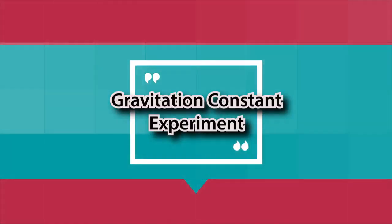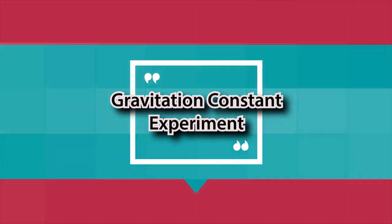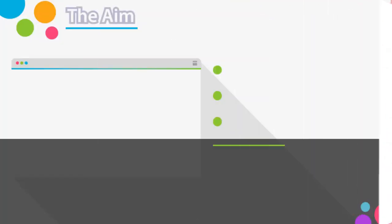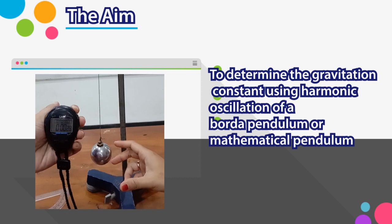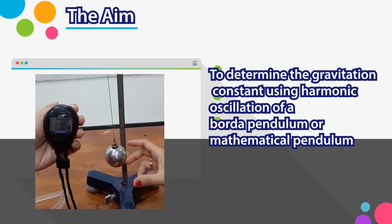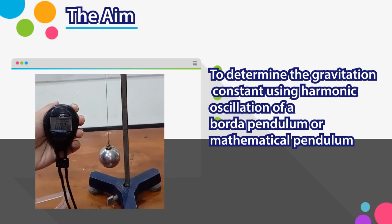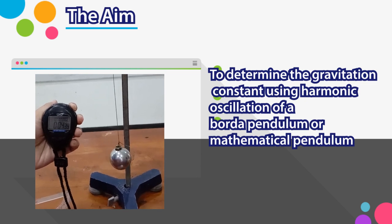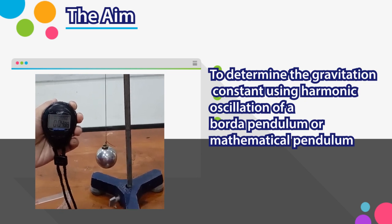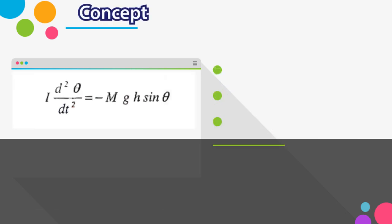Now let's go to the second part: the experiment about how to determine the gravitational constant. The aim is to determine the gravitational constant using harmonic oscillations of a border pendulum, also called a mathematical pendulum. Let's talk about the basic concept of mathematical pendulums.